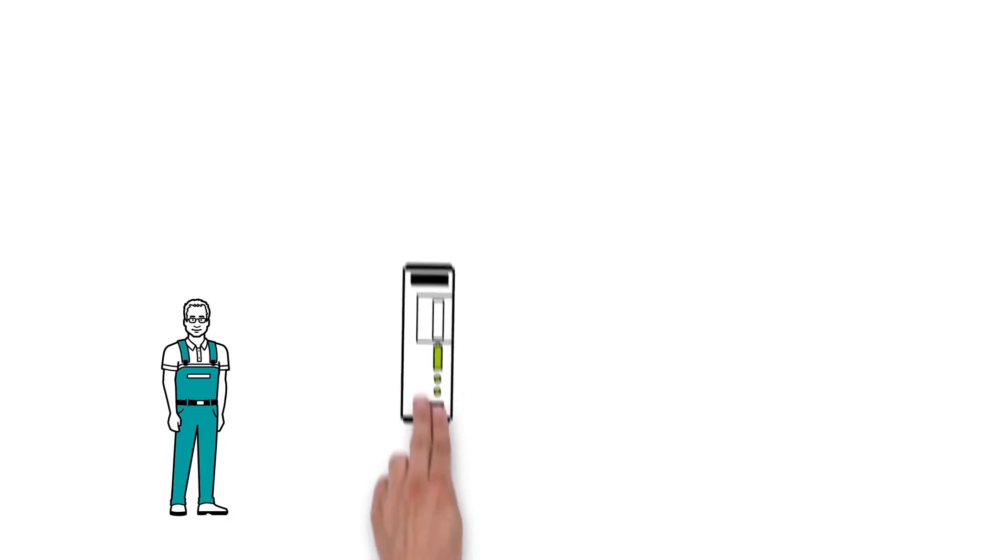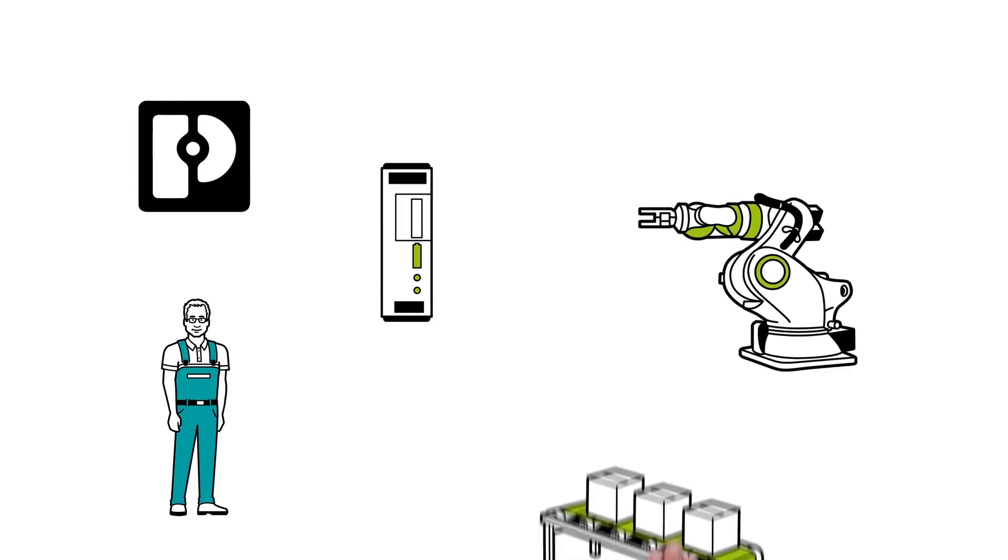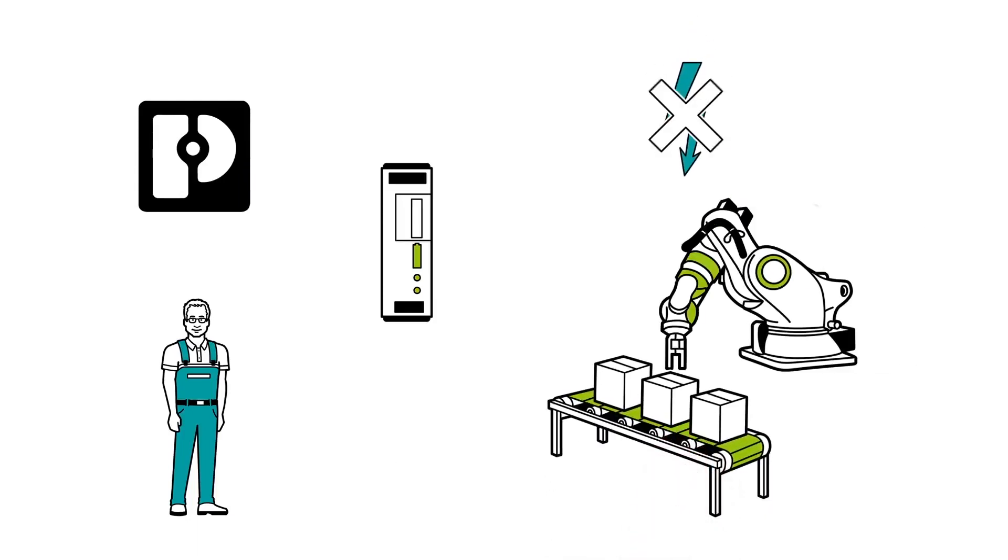Therefore, Mr. Muller decided upon the QUINT UPS from Phoenix Contact. Thanks to the uninterruptible power supply, the production robots can simply carry on working if there's a power failure.